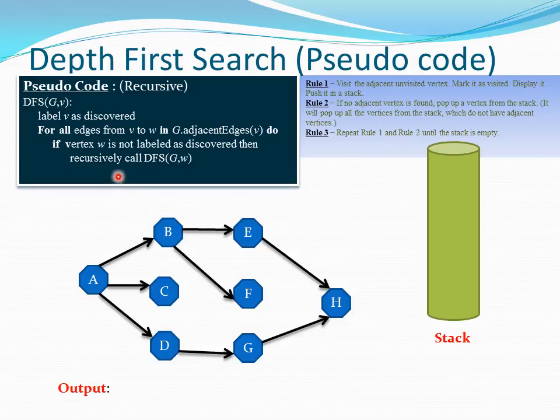Let us see this same pseudocode with our example. In our case, first we choose A as our starting node. We carry A and then we are labeling v as discovered, so we are saying this is discovered or visited.